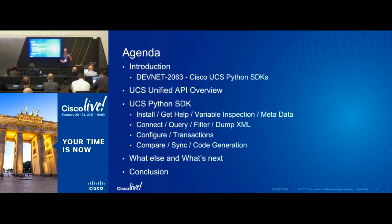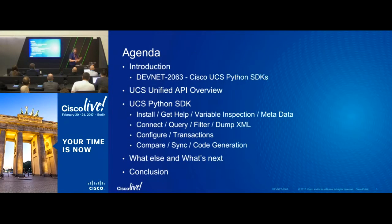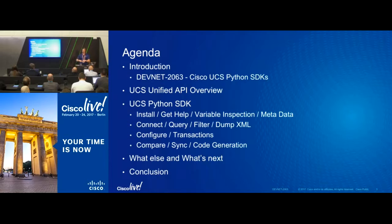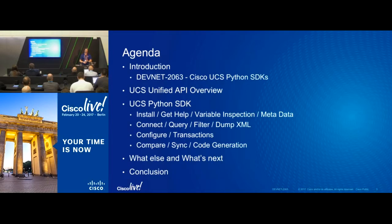There are a couple of things you do: connect, query, maybe filter those queries, do some configuration — instantiate, modify, delete. We also have things not part of the original XML API: the ability to compare and sync, and to do code generation — generating Python code from the graphical interface. On the horizon is continued maintenance of the UCSM SDK, the IMC SDK for standalone servers, and the UCS Central SDK.